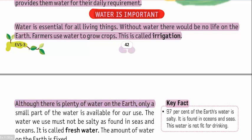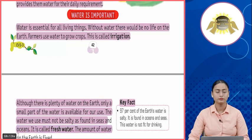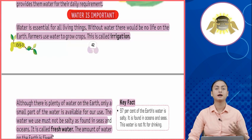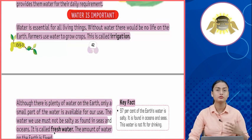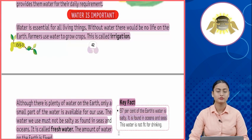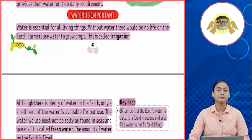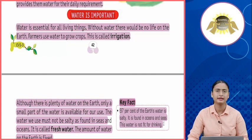Although there is plenty of water on earth, only a small part is available for our use. The water we use must not be salty as found in seas and oceans — it is called fresh water. The amount of water on earth is fixed. Key fact: 97 percent of the earth's water is salty, found in oceans and seas, and is not fit for drinking. Toh kebal 3 percent hi aisa paani hai jo peene ke liye, nahane-dhone ke liye, khane ke liye hum use kar paate hain.